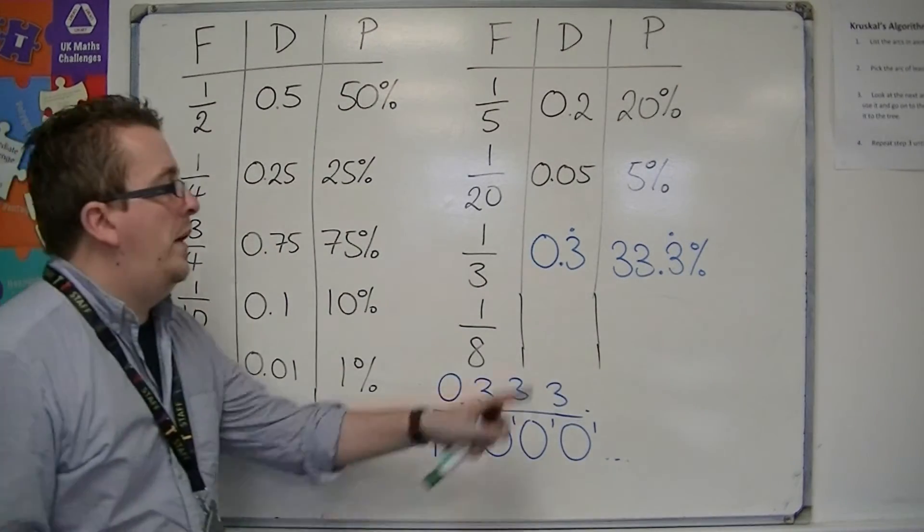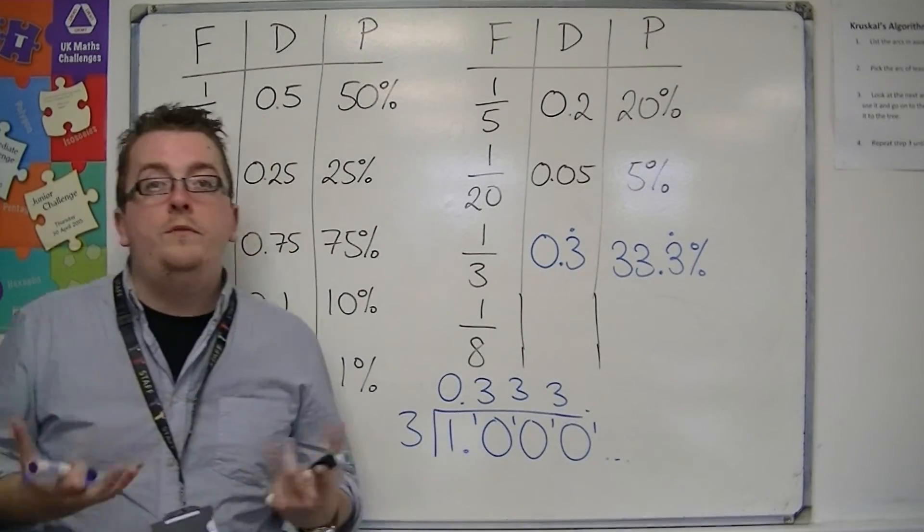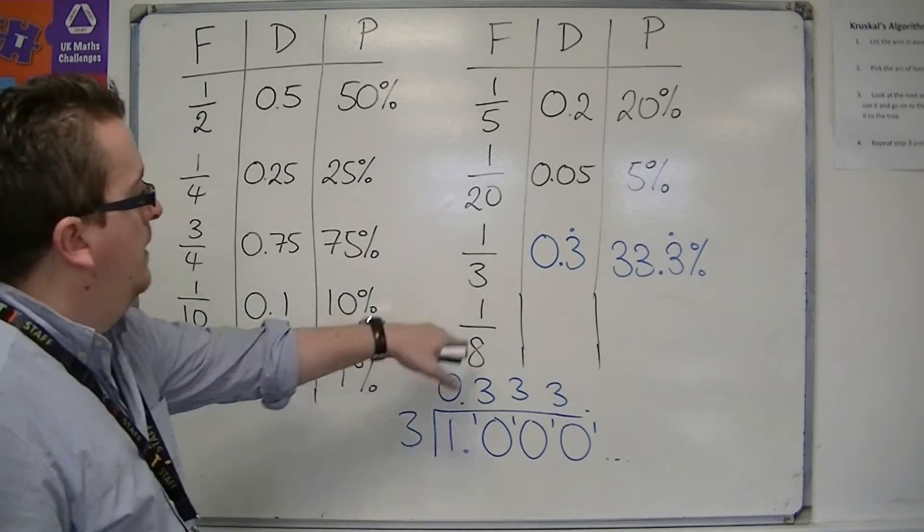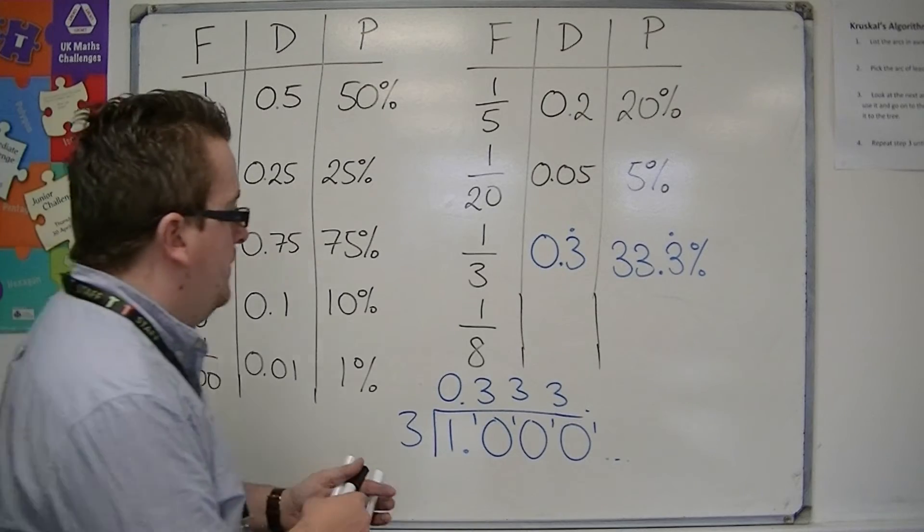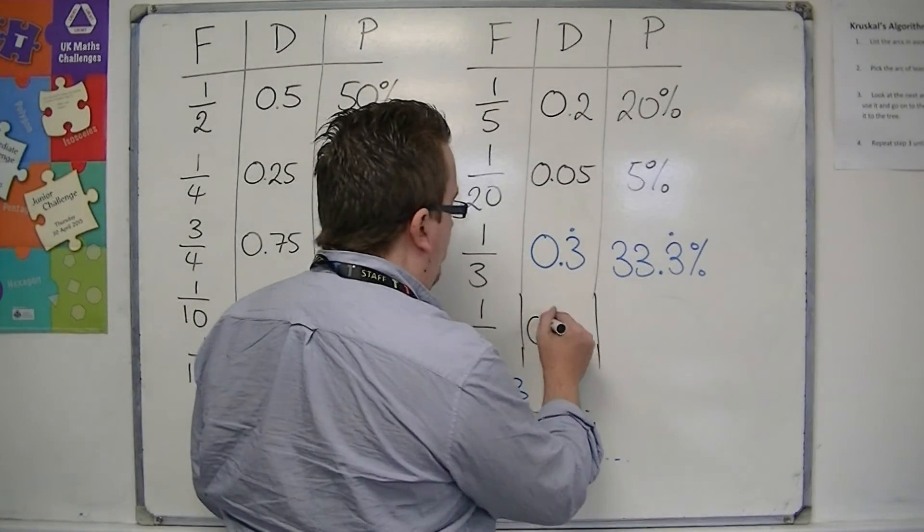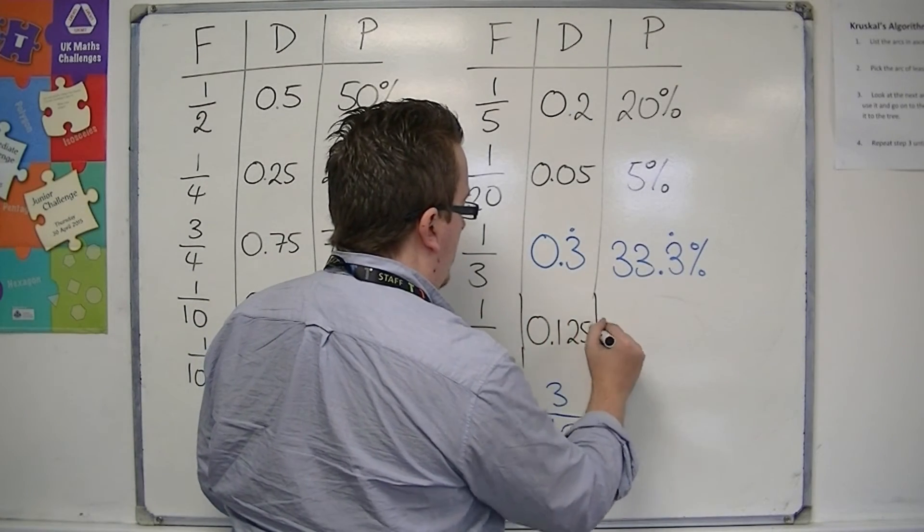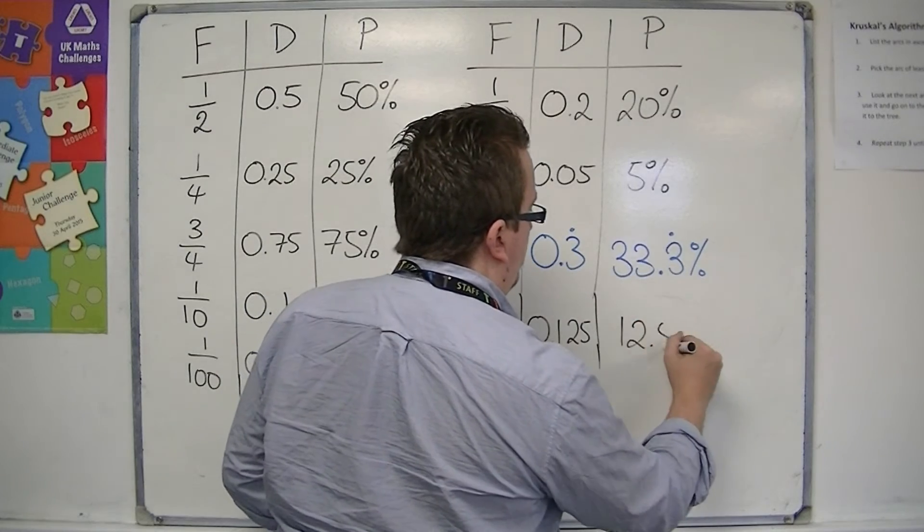So that's one that you would be useful to remember. 1 divided by 8, that's 0.125, which is 12.5%.